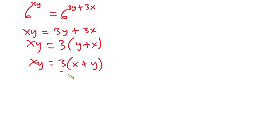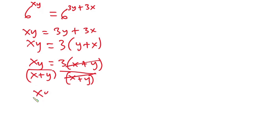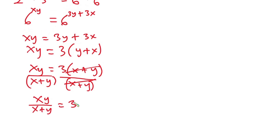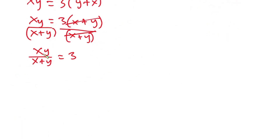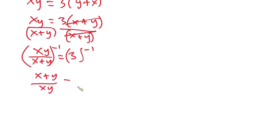Now I'm going to divide each side by x plus y, so that cancels on the right. We get xy over x plus y equals 3. Now considering the fraction we are finding, we have x plus y as the numerator and xy as the denominator. So we reciprocate each side of the equation, giving us x plus y over xy equals 1 over 3.